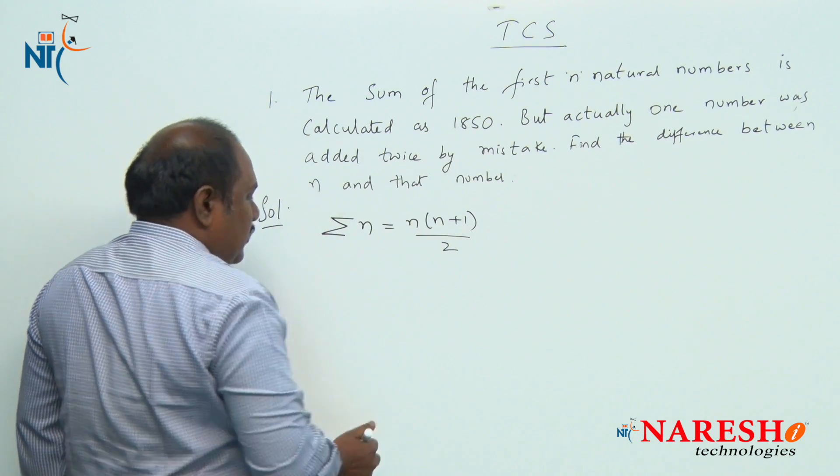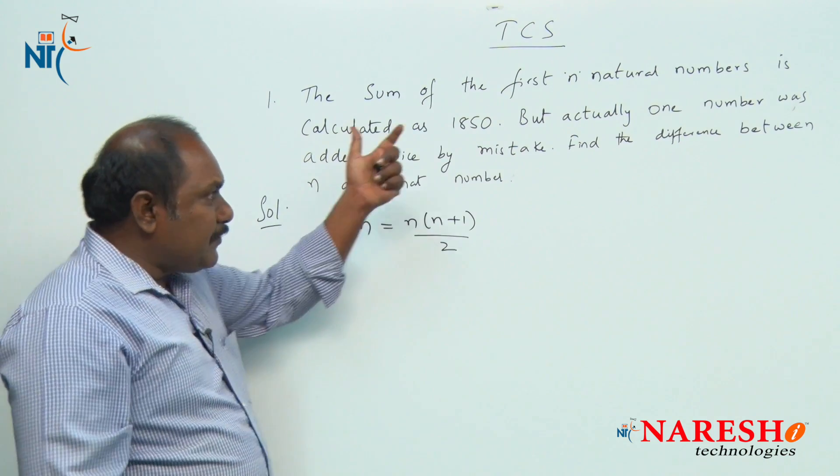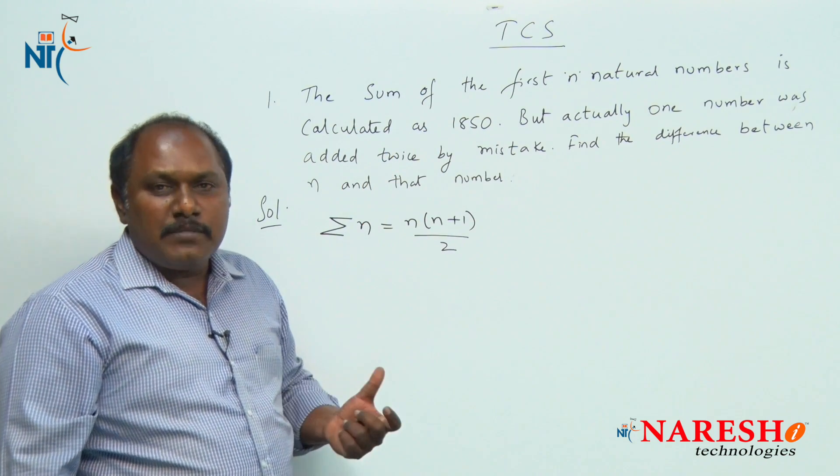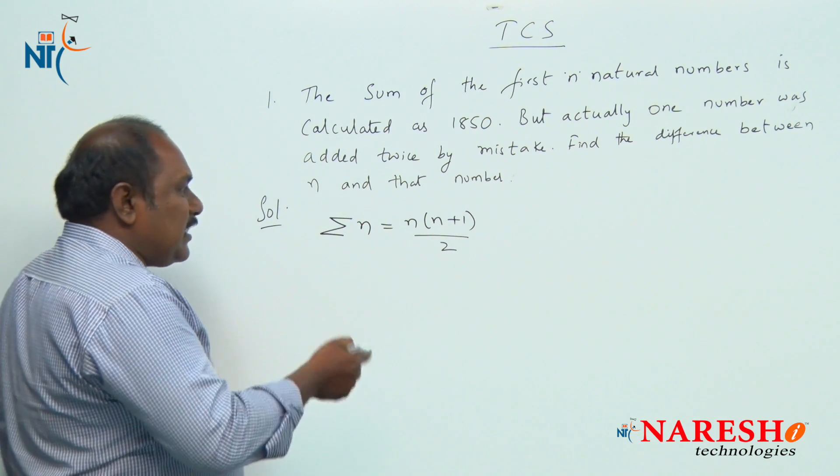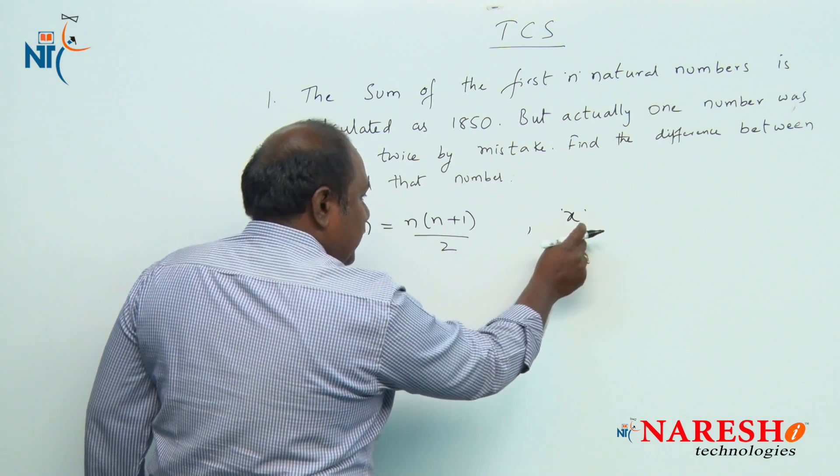According to the given question, he is saying that in these first n natural numbers, there is a number which is added twice. Let us assume the number which is added twice is x.